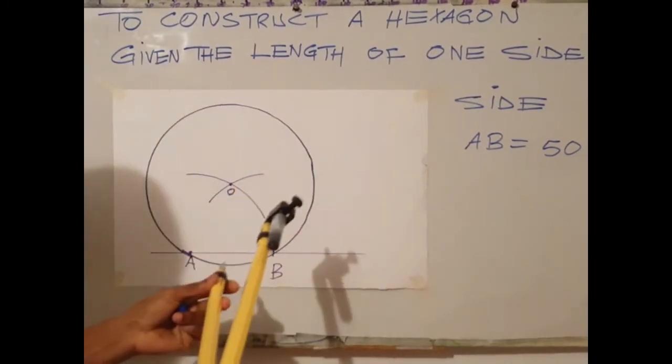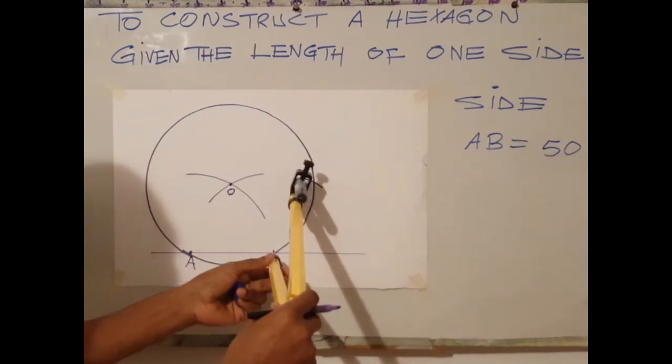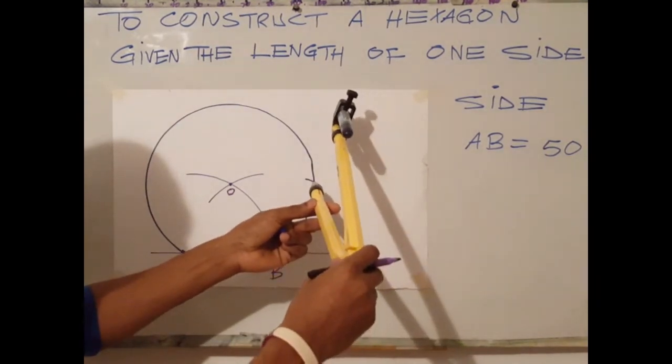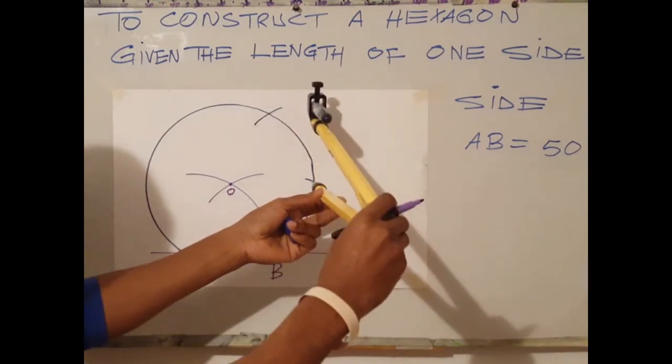Use the very same radius. Using B as center, scribe arcs on the circumference. At the point where the arc meets the circle, use that point as center. Continue scribing all the way around.